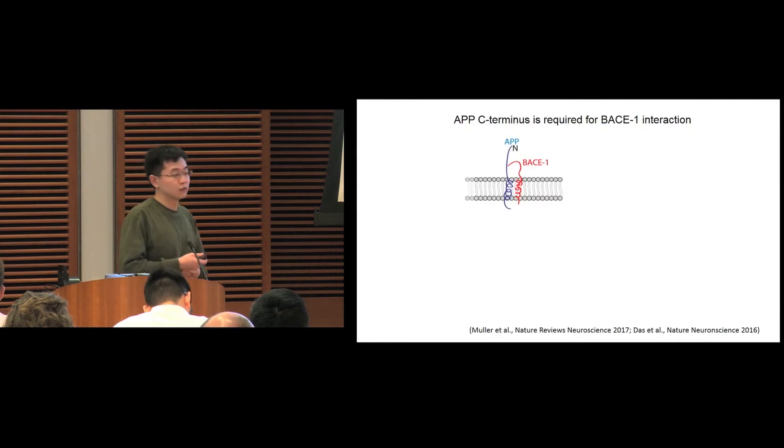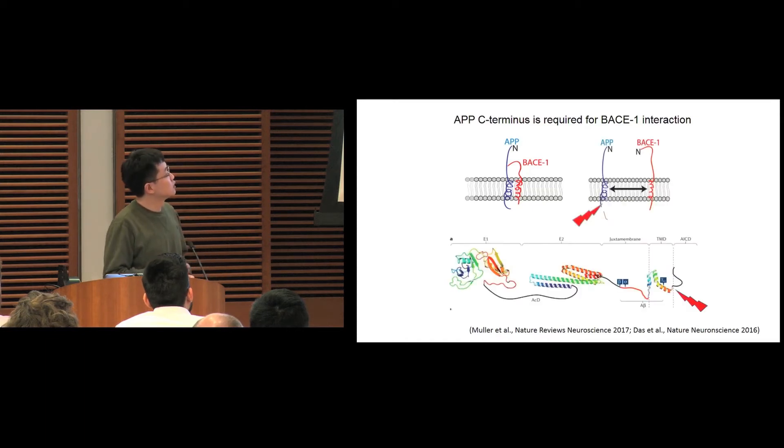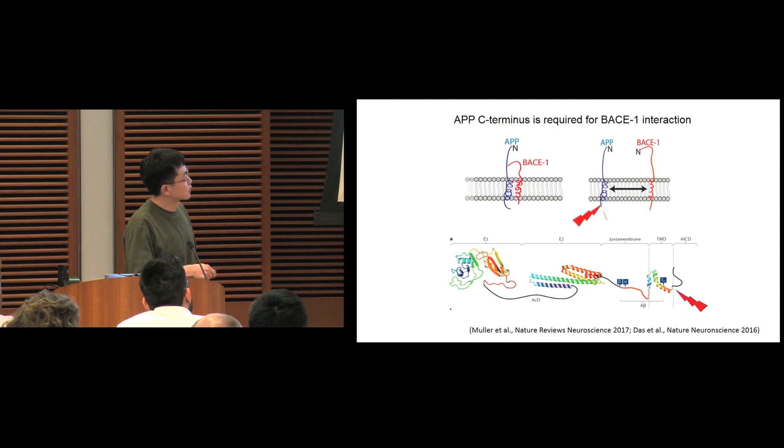Previously we and others found that APP and BACE1 could co-localize and interact in endosomes, where the beta cleavage occurs. Interestingly, we found if we express a truncation APP with deletion of the intracellular domain, this APP cannot interact with BACE1 and cannot undergo beta cleavage, even though this cutting site is away from the beta cleavage site. From this hint, we have an idea.